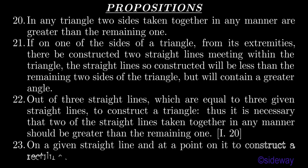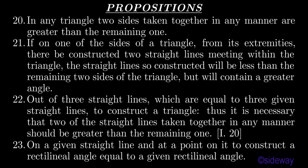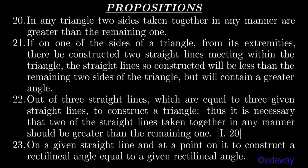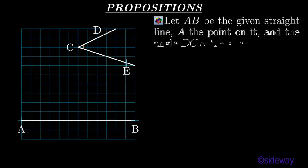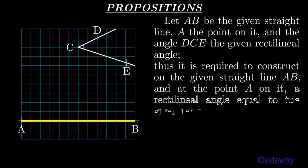Proposition 23. On a given straight line, and at a point on it, to construct a rectilineal angle equal to a given rectilineal angle. Let AB be the given straight line, A the point on it, and the angle DCE the given rectilineal angle.